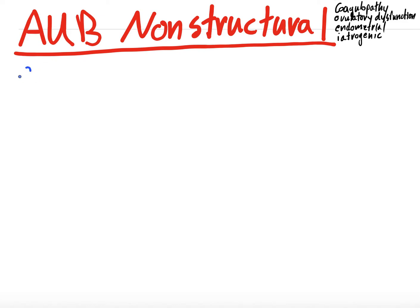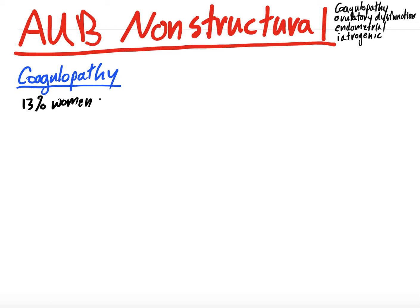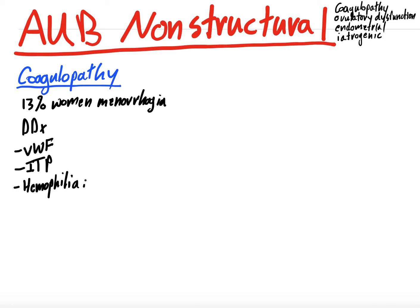The first thing we're going to talk about is coagulopathy. With abnormal uterine bleeding, it makes sense that a coagulopathic patient might have increased bleeding. About 13% of women who have menorrhagia — heavy periods — have a disorder of hemostasis. The differential includes von Willebrand's factor disease, immune thrombocytopenia purpura, hemophilia A or B (factors 8 or 9), and platelet function defects such as Glanzmann's or Bernard-Soulier.